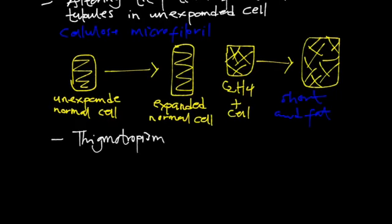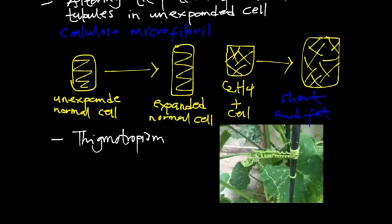Thigmotropism is a kind of tropism that plants display when they come into contact with a solid object like poles. You have what you have in this image over here, you realize that the tendrils are able to coil perfectly around the pole. So it helps climbing plants having these short and fat cells. It helps the plant to coil.